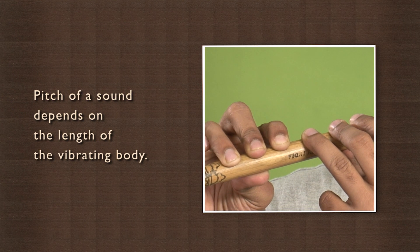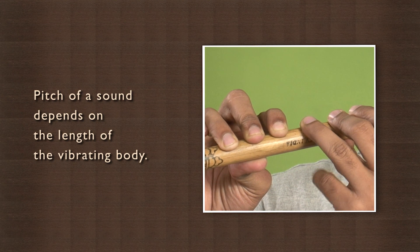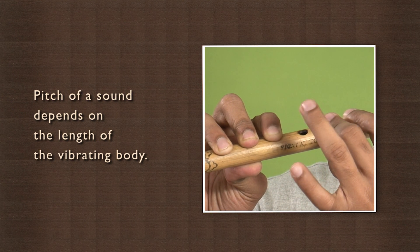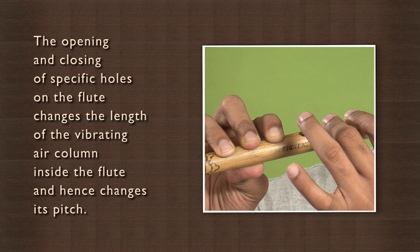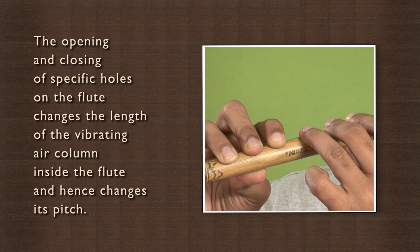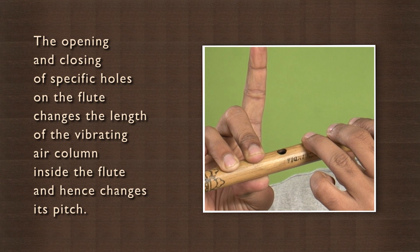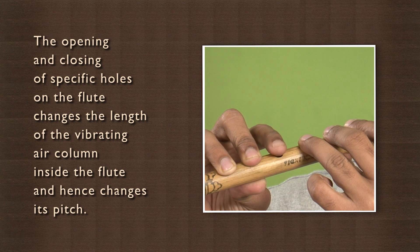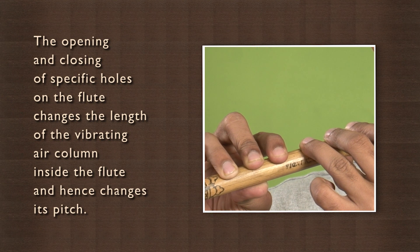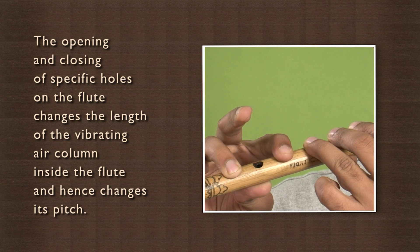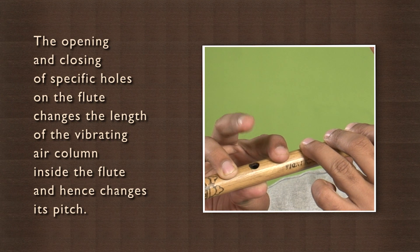Pitch of a sound depends on the length of the vibrating body. The opening and closing of specific holes in the flute changes the length of the vibrating air column inside the flute and hence changes its pitch.